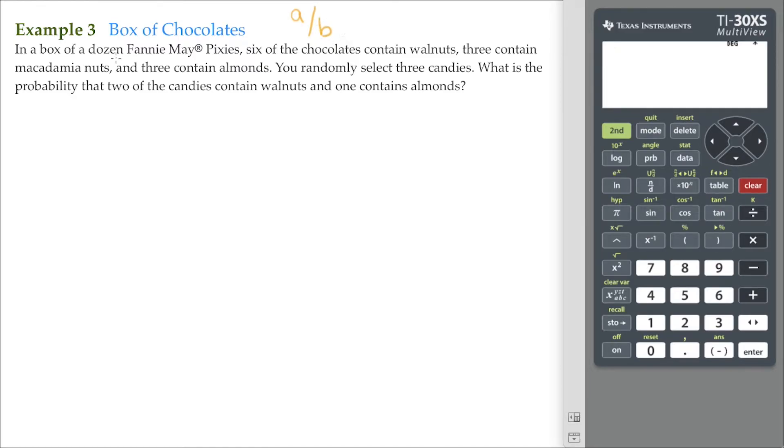Here, we have a dozen Fannie Mae's—that's 12. Six of those 12 contain walnuts, three of the 12 contain macadamia nuts, and three contain almonds.